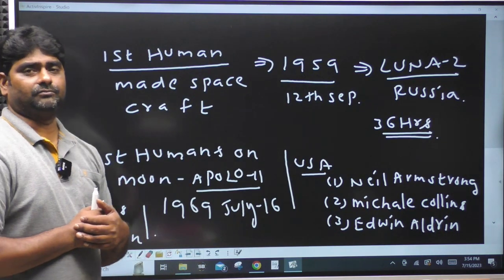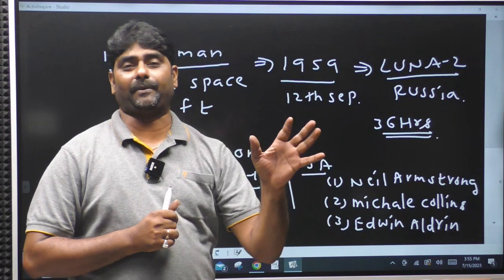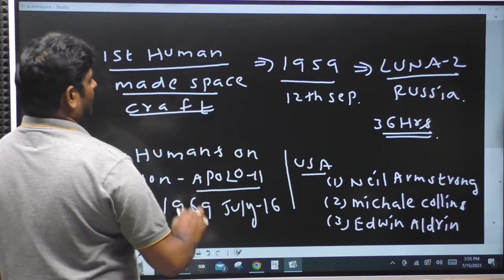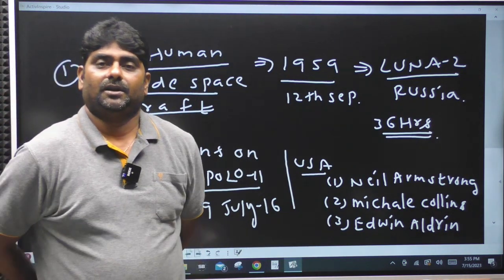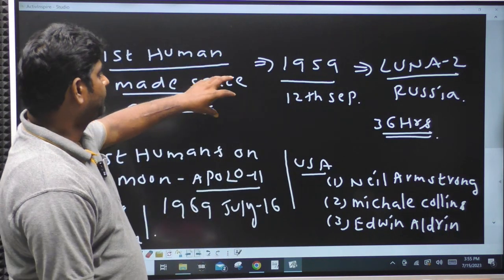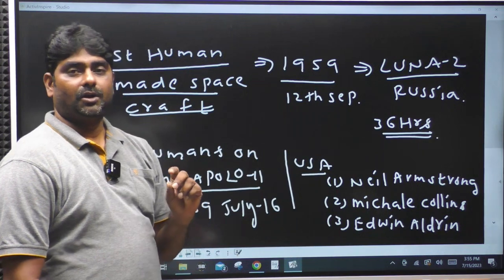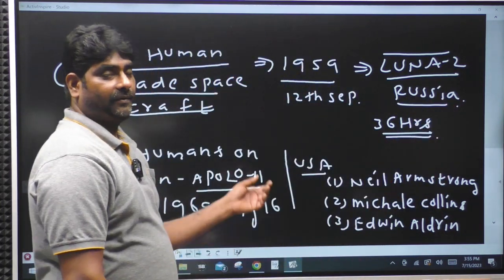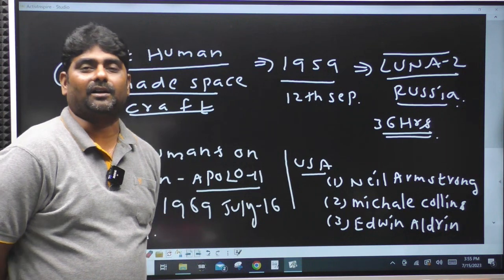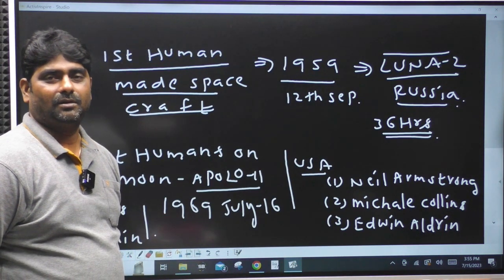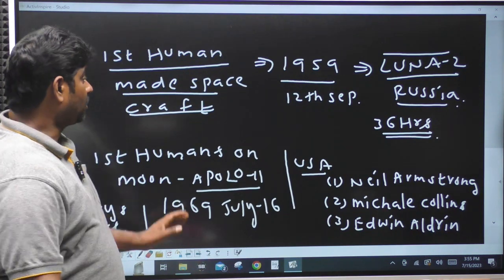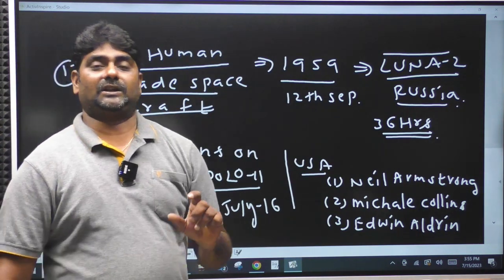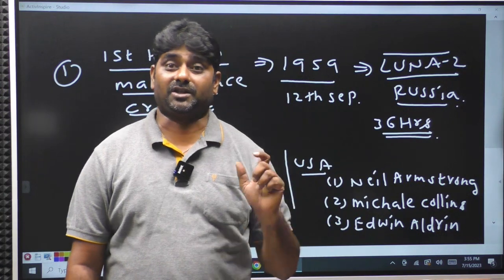The first human-made spacecraft to land on the Moon was Luna 2 from Russia, launched on 12th September 1959. It took about 36 hours, approximately one and a half days. So the first country to send a spacecraft to the Moon was Russia, with Luna 2.